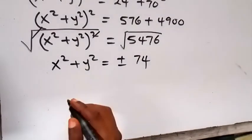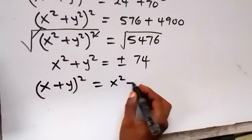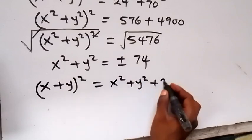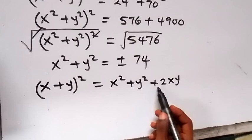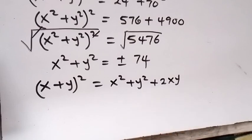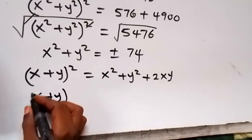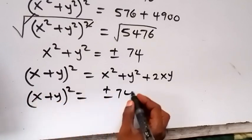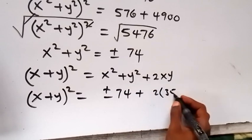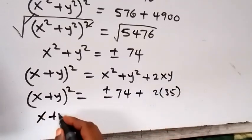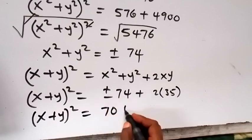From the identity x plus y, all squared, equals x squared plus y squared plus 2xy, let's substitute x squared plus y squared as plus or minus 74, and substitute xy as 35 from equation 2. Then x plus y, all squared, equals plus or minus 74 plus 2 times 35, which gives us x plus y squared equals plus or minus 74 plus 70.